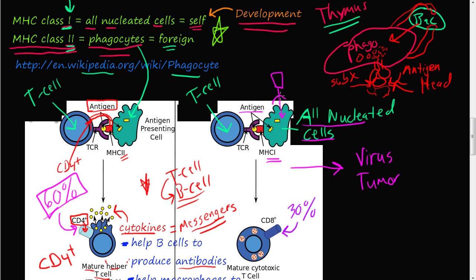The virus injects its DNA or RNA into the cell, and the cell gets taken over by the virus. Remember how the MHC complex normally displays normal parts from cellular metabolism and leftover parts from normal cell function? Well, this MHC complex is now going to start displaying parts of this virus that are abnormal — not all parts will be abnormal, but some will be. The T-cell, being a mature T-cell, will recognize that this isn't normal.